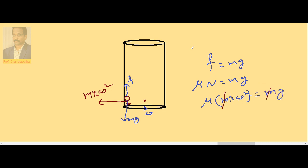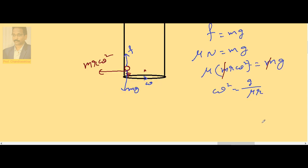Now cancel M on both sides, then omega square is equal to G by mu R, or omega is root over G by mu R.